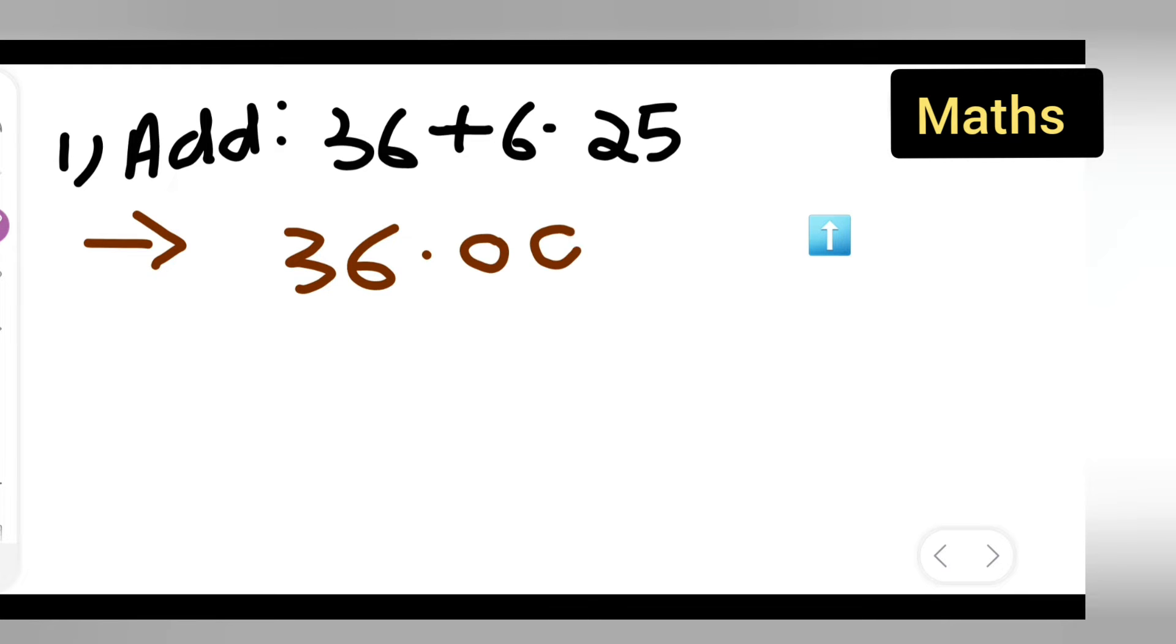36.00, and here you can write down 6.25. Okay, and add these numbers. So first, I have written 36.00 because I don't have any further number. Then 6 will come under this, point will come under point, and then 2 and 5.